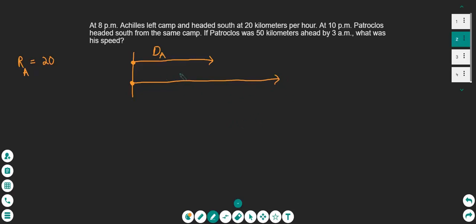So from Achilles' position to the end of Patroclus's distance is 50 kilometers. That's an important piece of information. Now we can set up our equations. The distance of Achilles is equal to the distance of Patroclus minus 50. I subtracted 50 because I'm trying to make these two distances equal. The distance of Achilles is smaller, so I take 50 away from Patroclus's distance to make them equal.